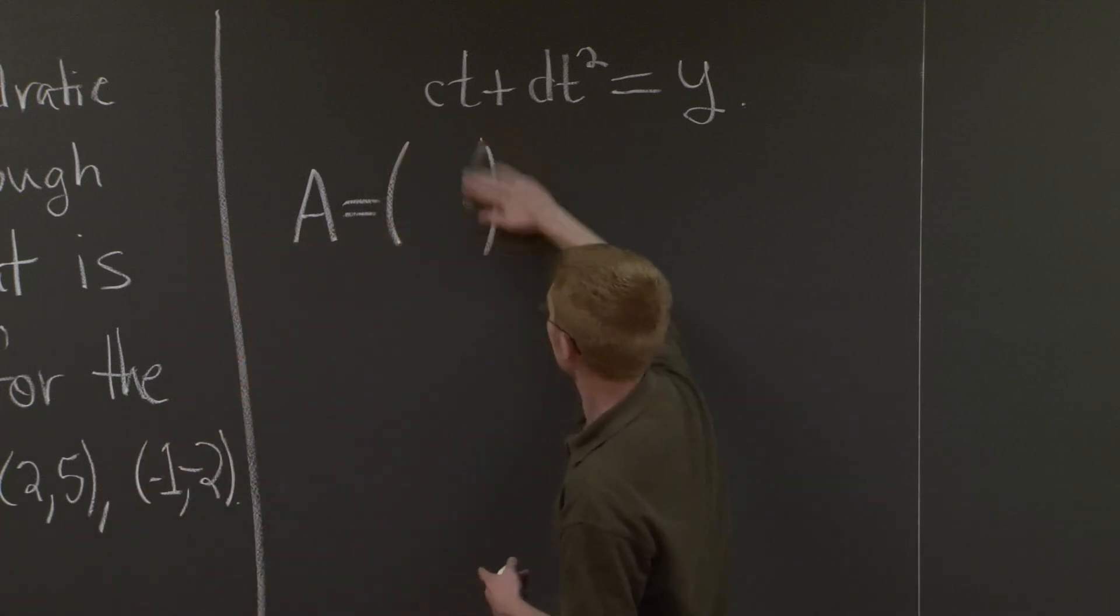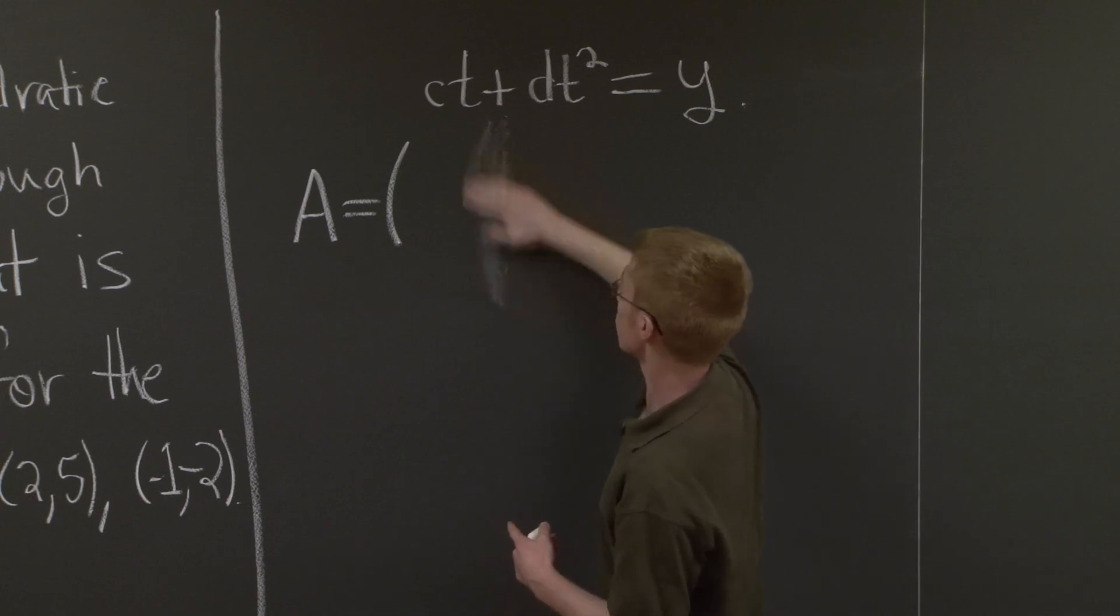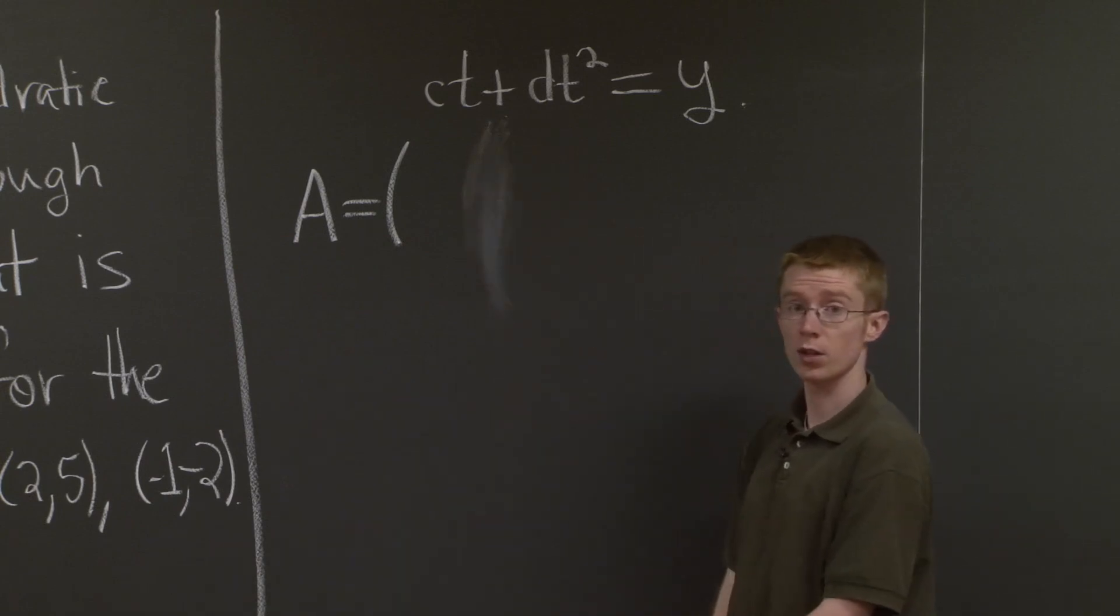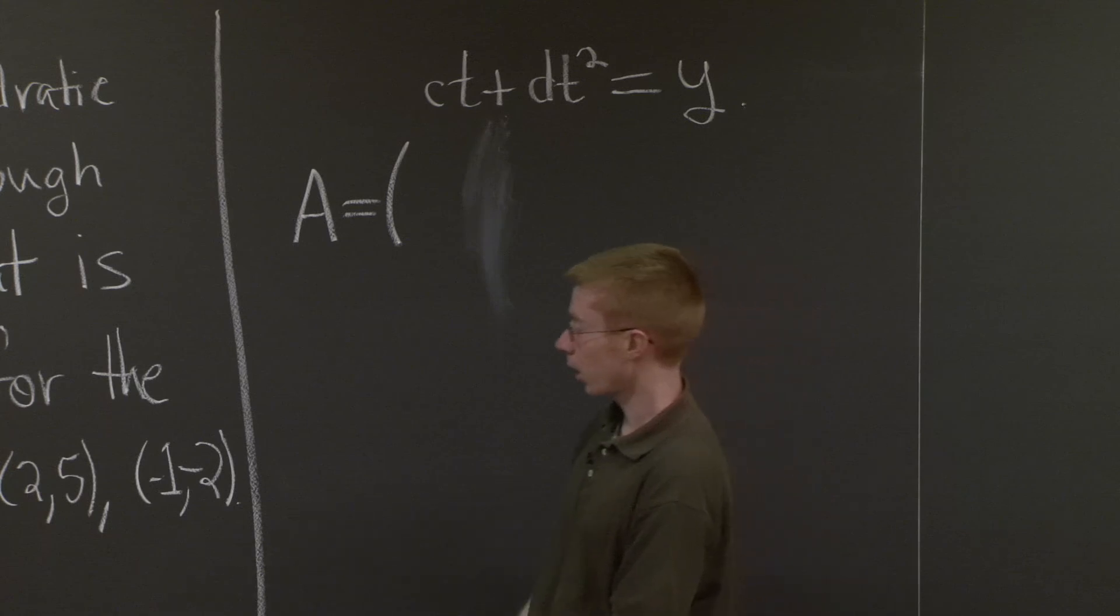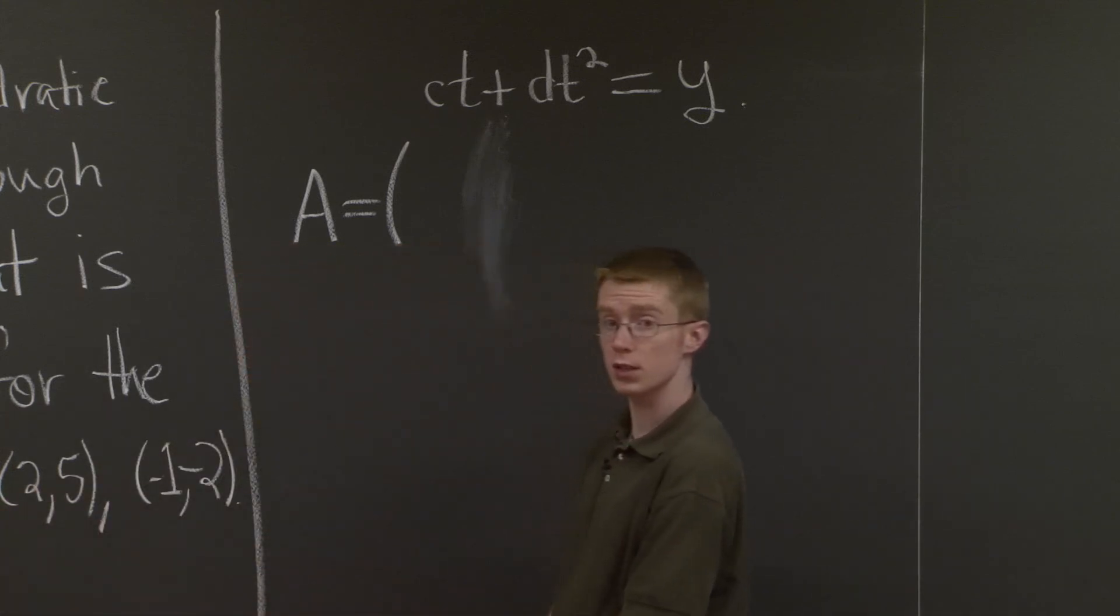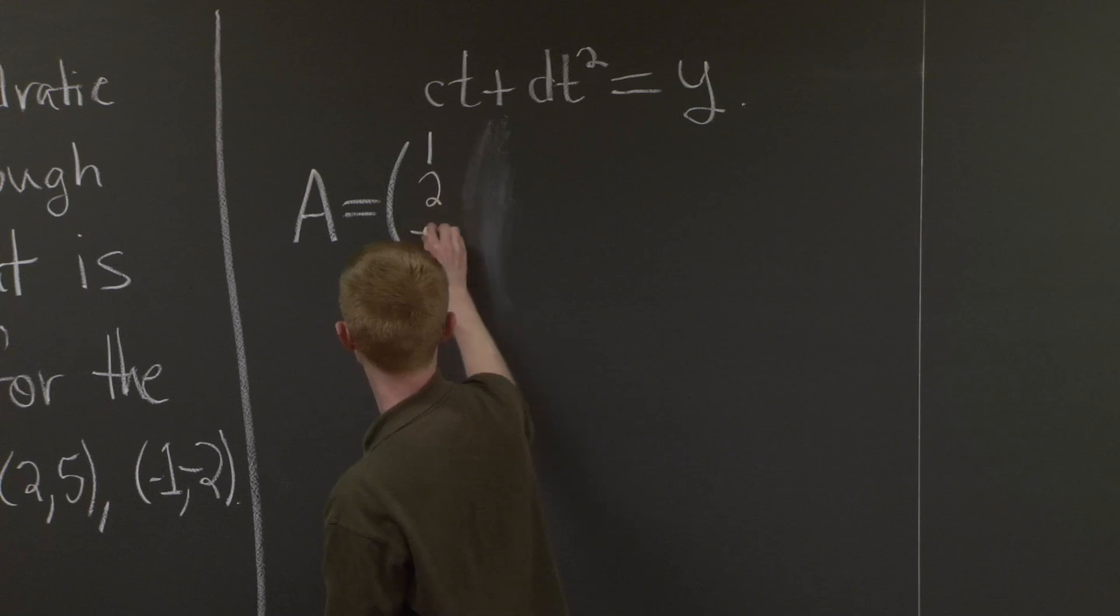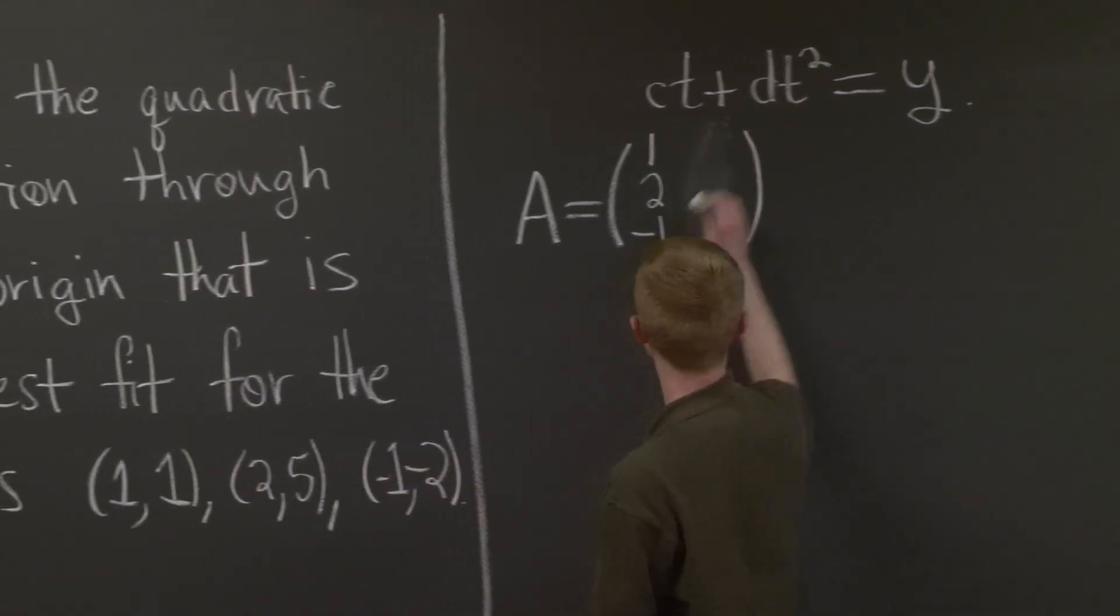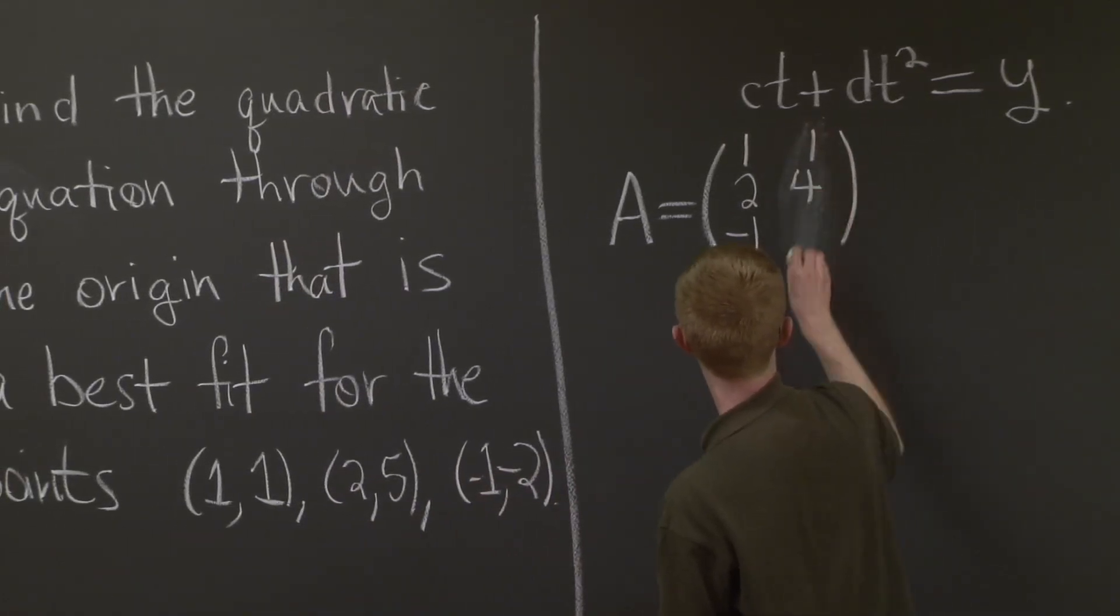And which matrix is that going to be? Well, let me start with the first coordinate of these three points. And I'm going to put them in the first column of this matrix: 1, 2, -1. And then my second column is going to be the squares of these first coordinates: 1, 4, and 1.